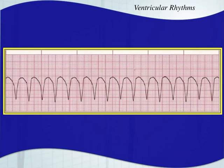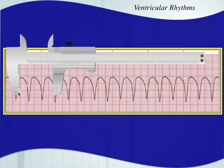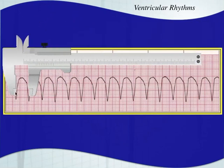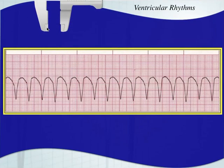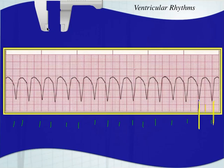Looking at this EKG strip, we have a wide QRS complex that's very regular. The rate — let's count them out — is about 160 beats per minute. Using the big box rule, measuring from one QRS complex to the next, it's almost two big boxes in between, which would be about 150 beats per minute — a pretty accurate estimate. It's faster than 100 beats per minute, it's a wide complex, it's very regular, and we don't really see any P waves anywhere. This is monomorphic VTAC.